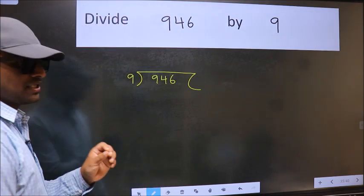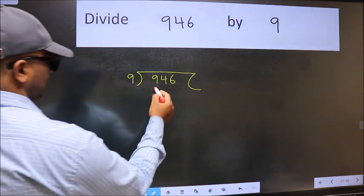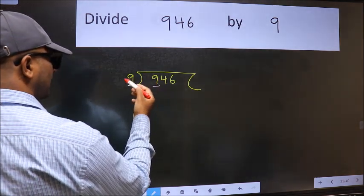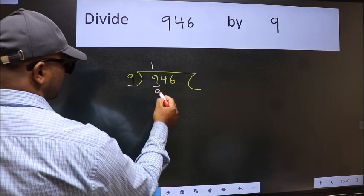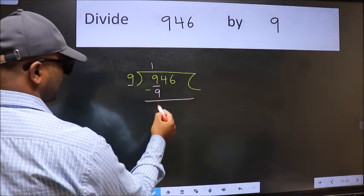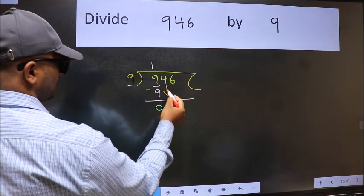This is step one. Next, here we have nine and here nine. When do we get nine in nine table? Nine once nine. Now we should subtract. We get zero. After this, bring down the beside number, so four down.